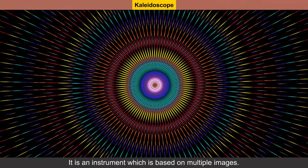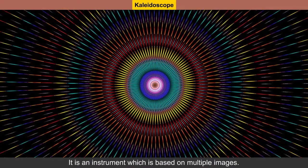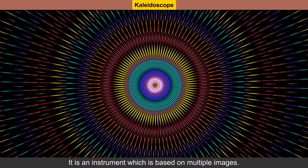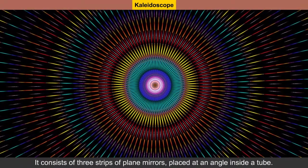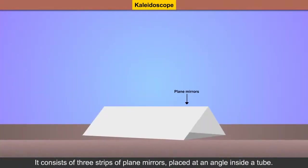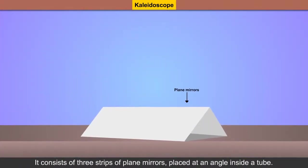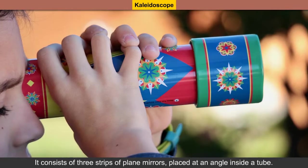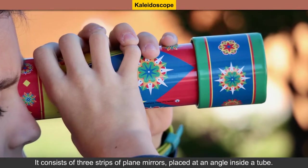Kaleidoscope: it is an instrument which is based on multiple images. It consists of three strips of plain mirrors placed at an angle inside a tube.